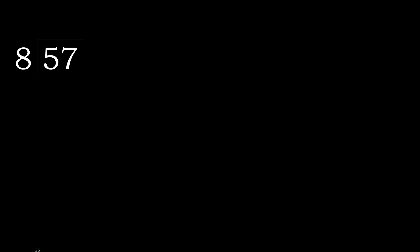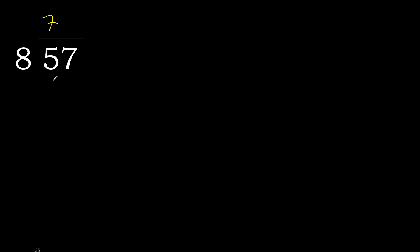57 divided by 8. 5 is less, therefore next. 57 is not less, therefore work with 57. 8 multiplied by which number is nearest to 57 but not greater? 8 multiplied by 8 is 64, which is greater. Multiply by 7: 56 is not greater.